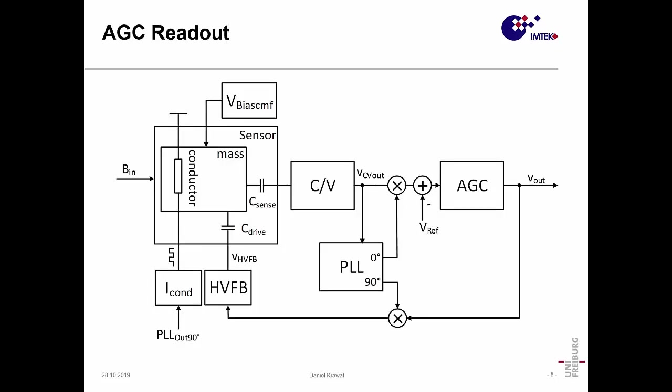We have the sensor here again with the mass conductor, sense capacitance and drive capacitance. The idea is that we have two control loops that keep the whole system in resonance and also the sensor motion at a constant amplitude. This signal here is proportional to the sensor motion and it's given to the PLL and then demodulated with a zero-degree phase signal from the PLL.